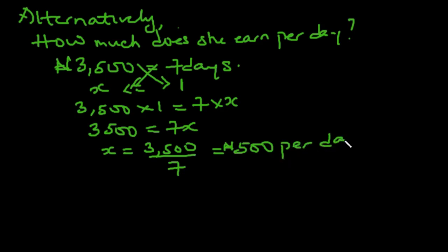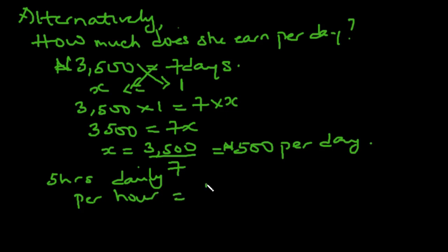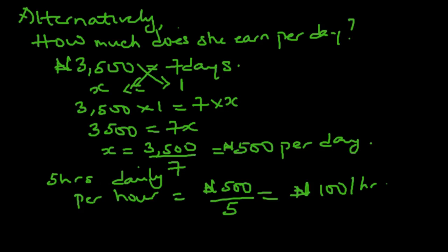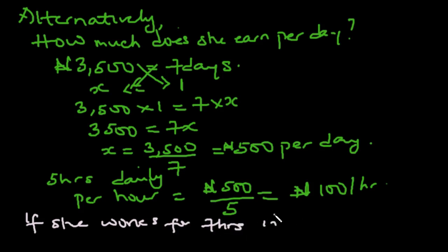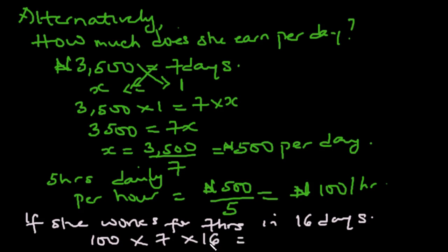She earns 500 naira per day but works five hours daily, so per hour she earns 500 divided by 5, which is 100 naira per hour. Getting back to our question: if she works 7 hours a day for 16 days at 100 naira per hour, her total earnings are 100 multiplied by 7 multiplied by 16. Since 7 times 16 is 112, that gives us 112 times 100, which is again 11,200 naira. Either way, we get the same answer.